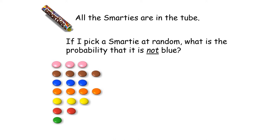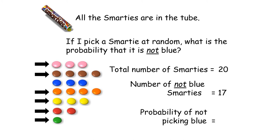All the Smarties back in the tube. If I pick a Smartie at random, what's the probability that it's not blue? There are 20 Smarties - how many are not blue? Rather than counting all the non-blue ones, if there are 20 Smarties in total and 3 are blue, then 17 are not blue. So the probability of picking a Smartie that's not blue is 17 out of 20. Make sure that 'not' is there. This is already in its simplest form.